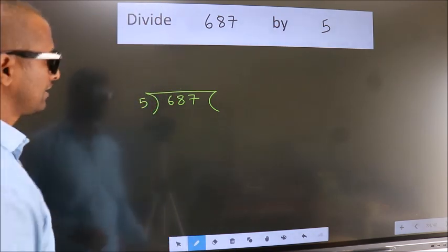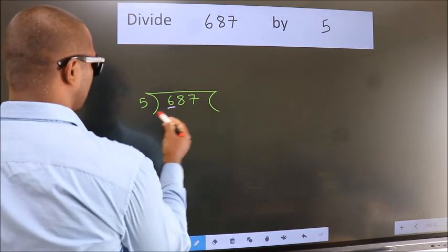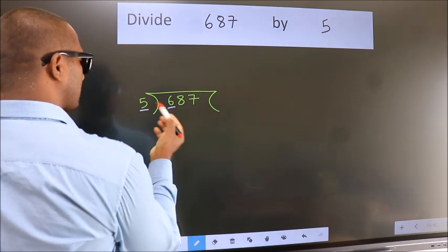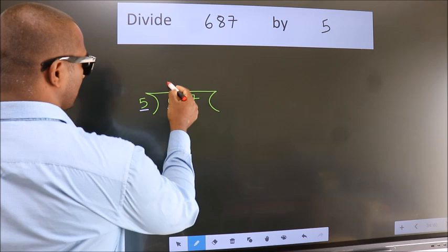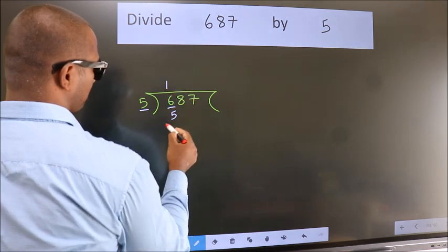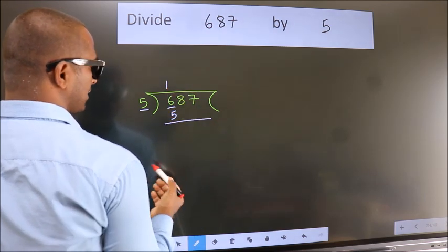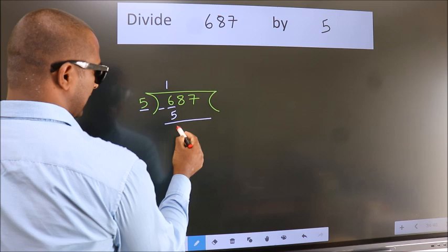Next. Here we have 6, here 5. A number close to 6 in 5 table is 5 once 5. Now we should subtract. We get 1.